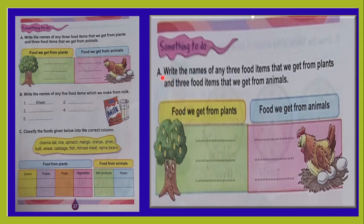Exercise A: Write the names of any 3 food items that we get from plants and 3 food items that we get from animals.